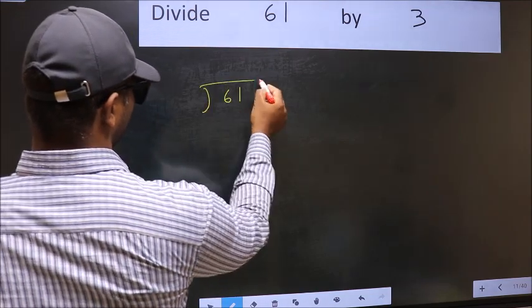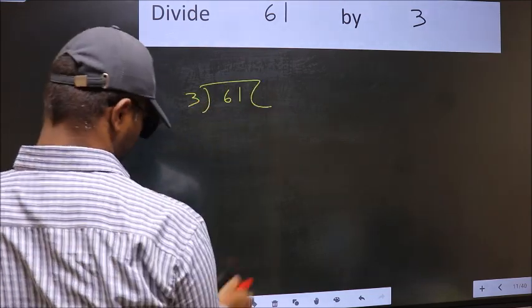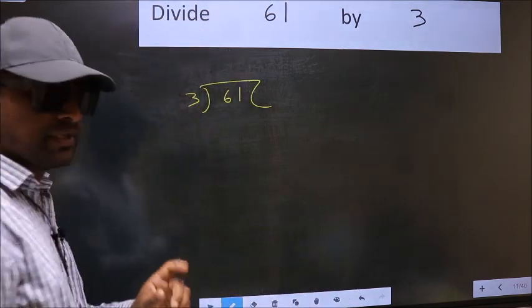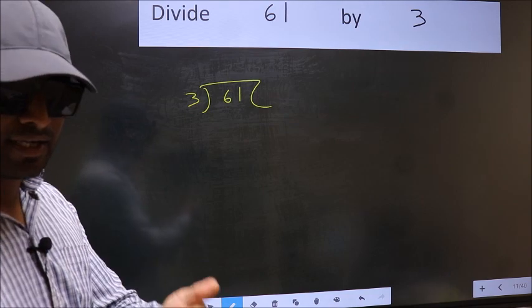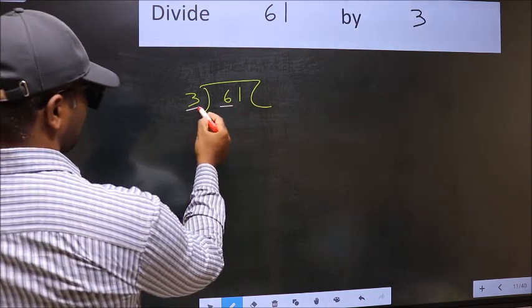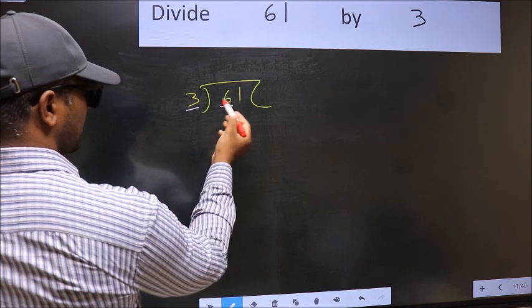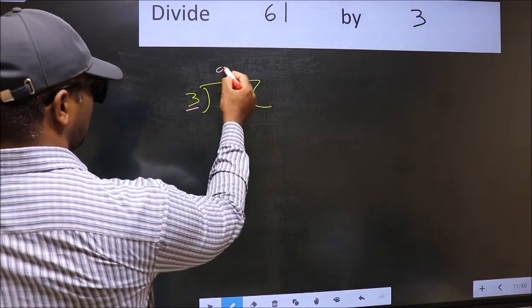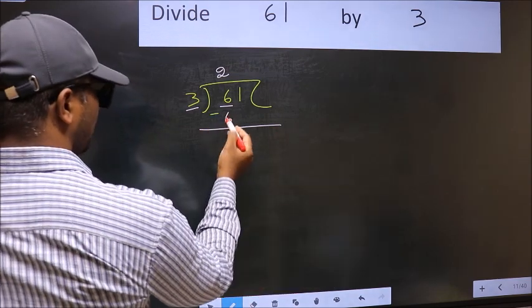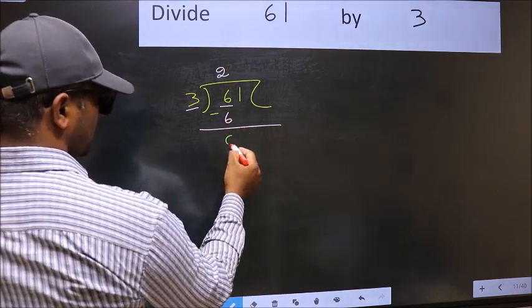61, 3 here. This is your step 1. Next, here we have 6 and here 3. When do we get 6 in the 3 table? 3 times 2 is 6. Now you should subtract. 6 minus 6 is 0.